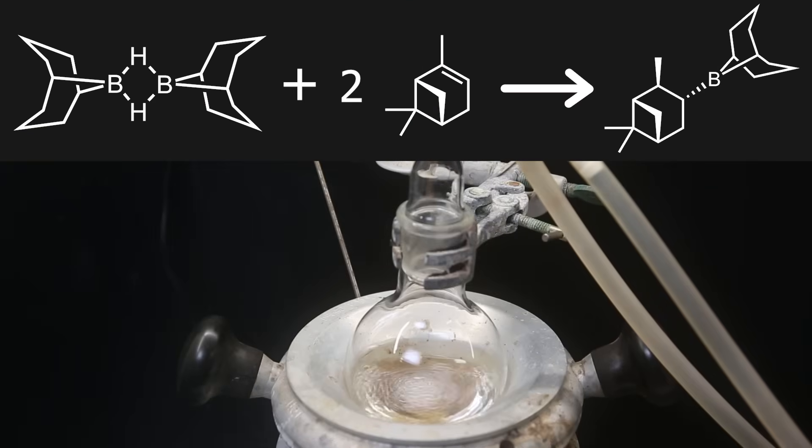In this reaction, one 9BBN molecule can react with the double bonds of two pinene molecules, where one hydrogen will be donated to the most substituted carbon, while the boron attaches itself to the other carbon, both in the same configuration. It is the stereocenters that were already on the pinene that favor one configuration.